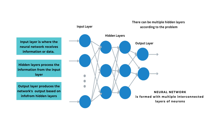Each layer in a neural network plays a crucial role in processing and transforming the data. The input layer receives the data, the hidden layer performs computations on it, and the output layer produces the final prediction or output.